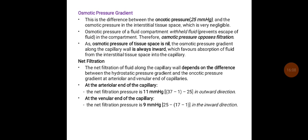The osmotic pressure gradient is the difference between the oncotic pressure (about 25 mmHg) and the osmotic pressure in the interstitial space, which is very negligible and can come to almost zero. The osmotic pressure of a fluid compartment prevents the escape of fluid; therefore, osmotic pressure opposes filtration. Since the osmotic pressure of the tissue space is nil, the osmotic pressure gradient along the capillary wall is always inward, favoring absorption of fluid from the interstitial tissue space into the capillary.